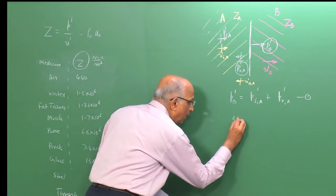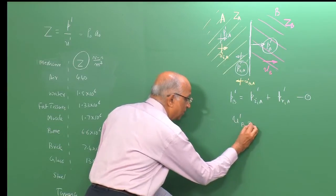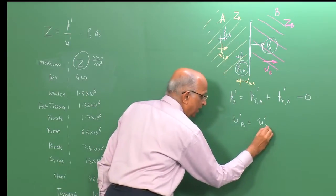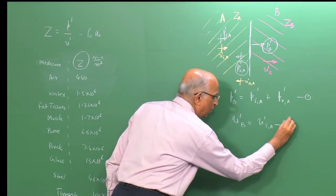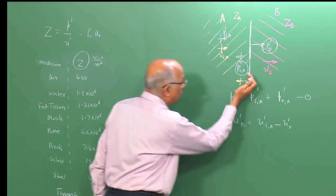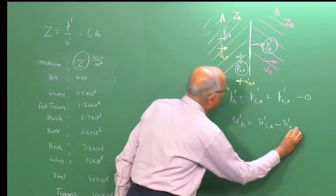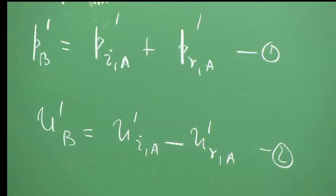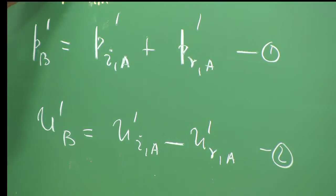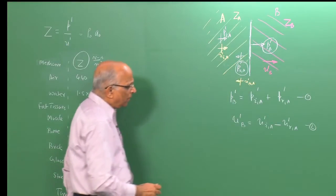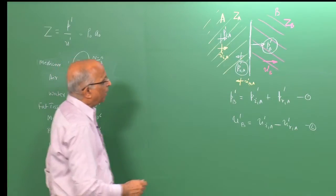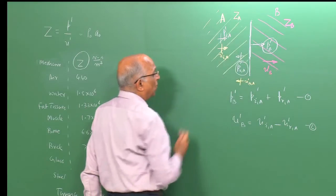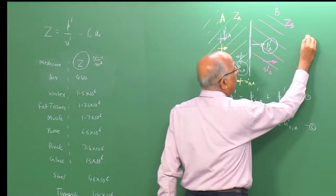At the interface, some velocity comes in and some is pulled back. Therefore: u_b prime = u_ia prime − u_ra prime. These are the two equations from which I want to solve for p_ra and p_b.